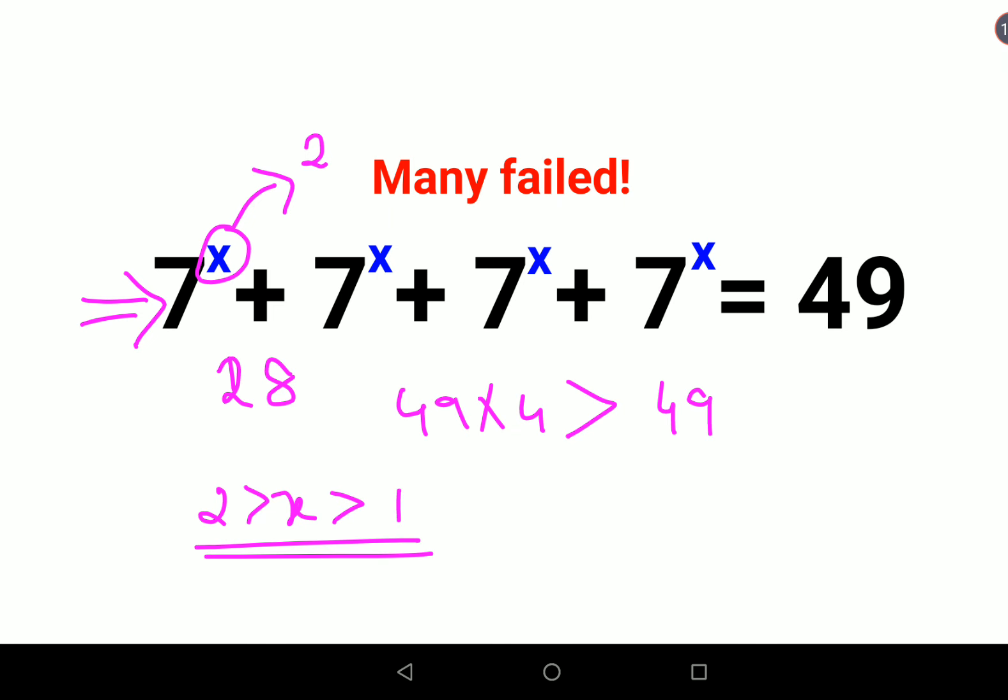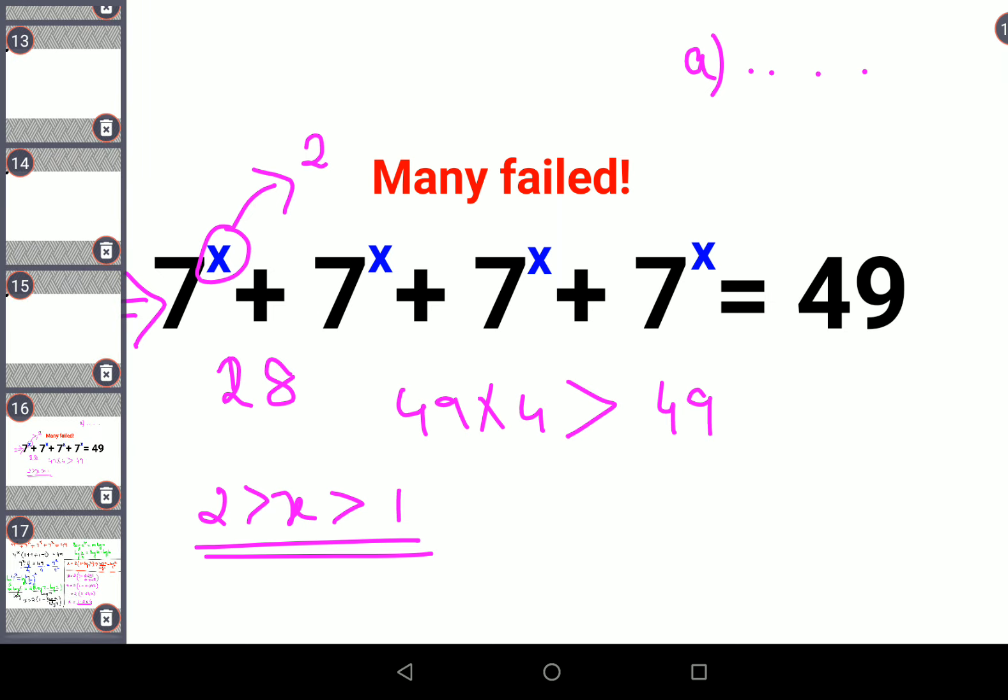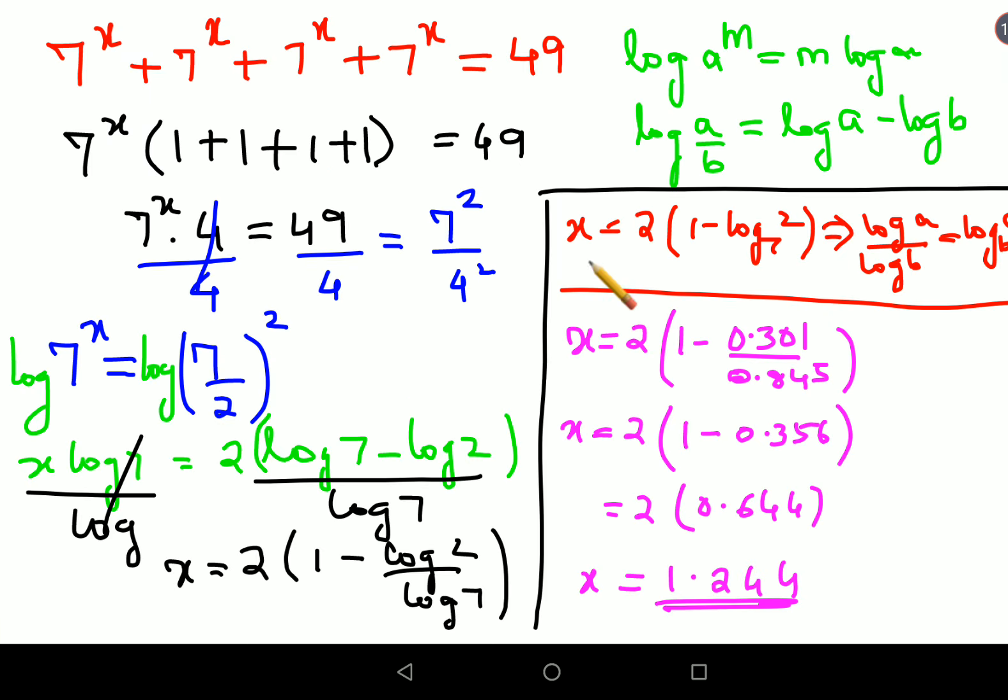So this is something which is very important for you all, at least from the perspective of entrance levels. So in your options, if they have directly given you values, then you can understand that your value will lie between 1 and 2, so it will be 1 point something. And if not, if they have given you the values or the options in this format, then you will have to use the method which I just showed.